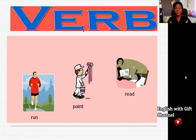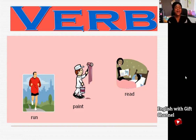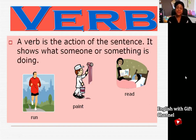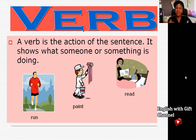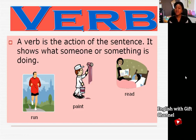What is a verb? A verb is an action word, or you can say a verb is a doing word — it is the action in every sentence. For example, run, paint, and read are all action words. A verb shows what someone or something is doing. What am I doing right now? I am teaching, explaining, speaking. Teach, explain, talk, speak — they are all examples of verbs.